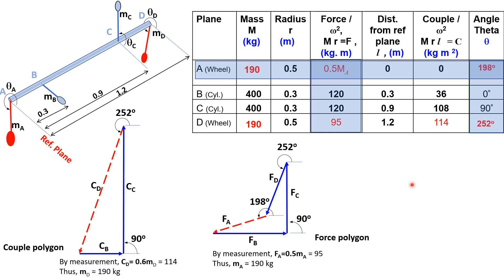The same problem can be solved analytically using the couple equations: Σ(m×r×l×sinθ) = 0 and Σ(m×r×l×cosθ) = 0 to find θ_d and m_d, then the force equations Σ(m×r×sinθ) = 0 and Σ(m×r×cosθ) = 0 to find θ_a and m_a.